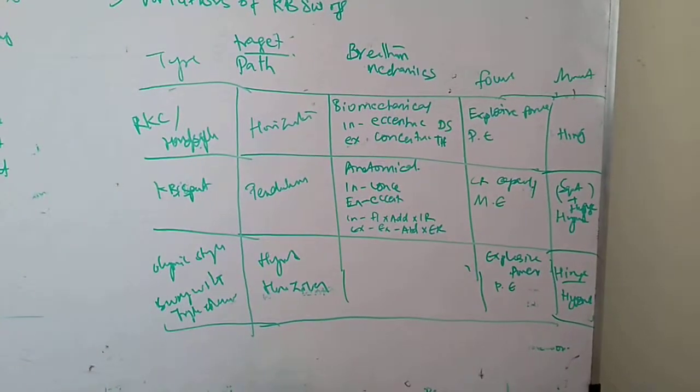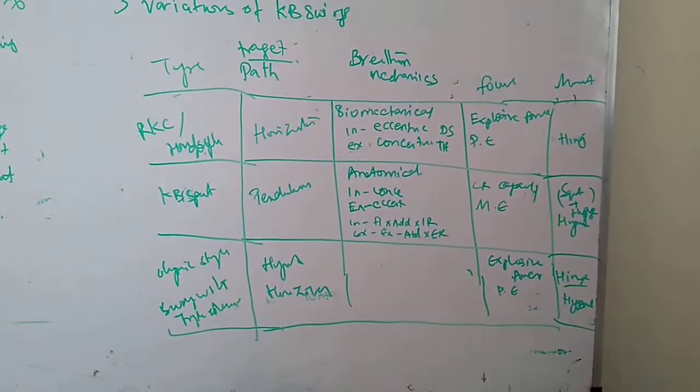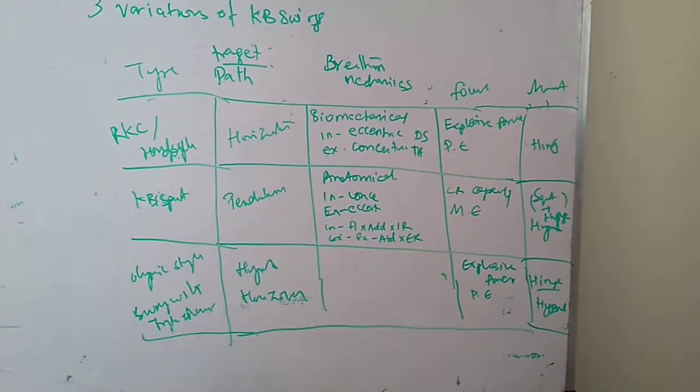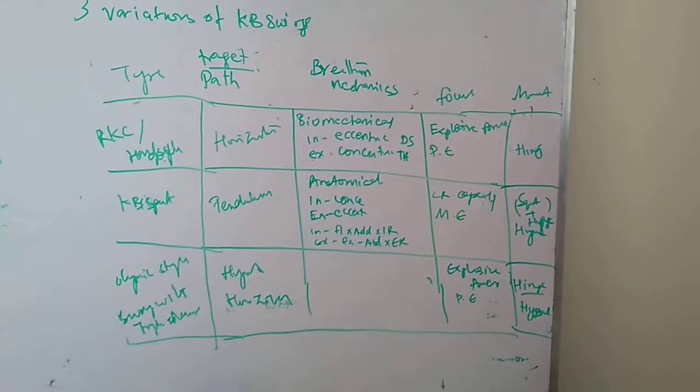So in this table you can see the types, the path of the bell, breathing mechanics, the focus or intent of the particular type, and finally the movement.